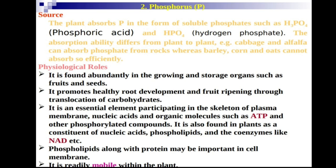Phosphorus is found abundantly in growing and storage organs like fruits and seeds. It promotes healthy root development and fruit ripening through the translocation of carbohydrates. These are two of the most important physiological functions of phosphorus.